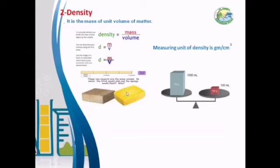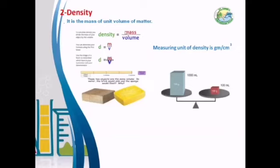If we have a problem: what is the density of 35 grams of a substance that occupies 25 cubic centimeters? We have mass = 35 g and volume = 25 cm³. Density equals mass divided by volume, so it equals 35 divided by 25, which is 1.4 grams per cubic centimeter. To calculate mass: mass equals density times volume. To calculate volume: volume equals mass divided by density.